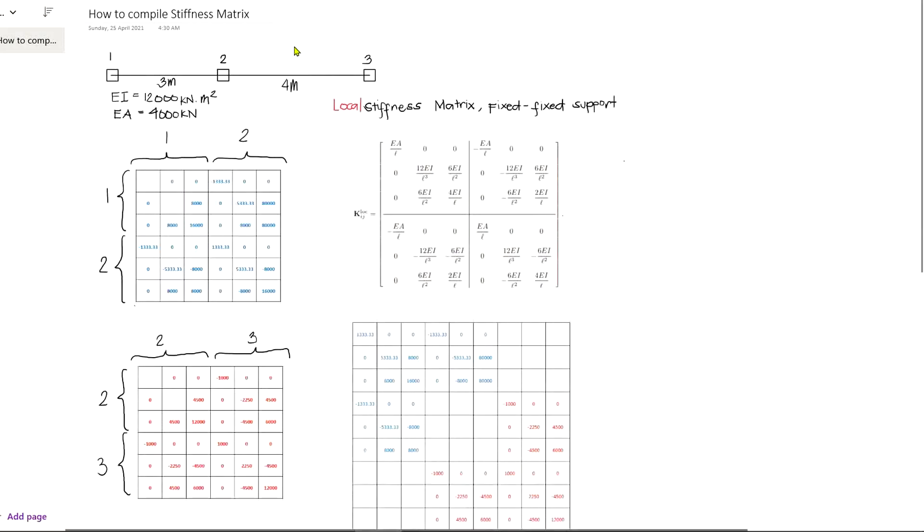Let's do a compilation of stiffness matrix. This is very useful when performing finite element analysis. For this, let's take a very simple example. Here is a beam discretized by two elements, element 1-2 and 2-3. All in all we have three nodes: 1, 2, and 3. Now in each node there are three degrees of freedom: translation X, translation Y, and rotation.